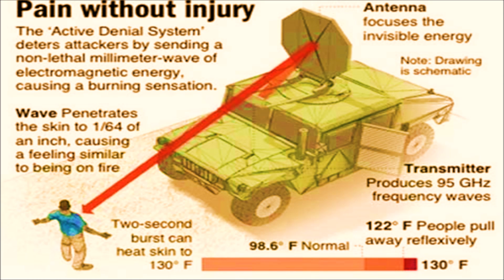As soon as the antenna focuses the invisible energy, the wave penetrates the skin to 1/64th of an inch, causing a feeling similar to being on fire. This 2-second burst can heat the skin up to 130 degrees Fahrenheit, making people pull away reflexively. An intense burning sensation continues until the transmitter is turned off or the targeted individual moves out of the beam's range.